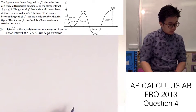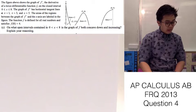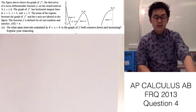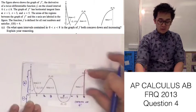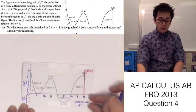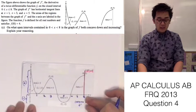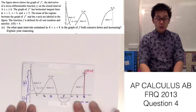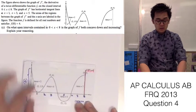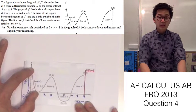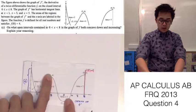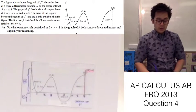For problem letter C, we are supposed to find where the function is both concave down and increasing, and explain our reasoning. Since we're given the graph of f prime, the function f is increasing where f prime is positive — above the x-axis. Concavity is determined by looking at the direction of the slope of the f prime graph: on the interval 0 to 1 the concavity is going down, from 1 to 3 it is going up, from 3 to 5 it is going down, and so on.